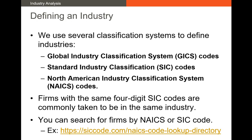So how do we define an industry? Well, there are several classification systems that are very popular the world over. You're probably familiar with the GIX codes. These are the 11 sectors of any economy. We've seen them in class and they're a very common coding system.